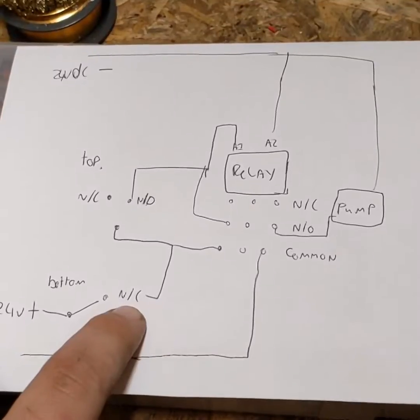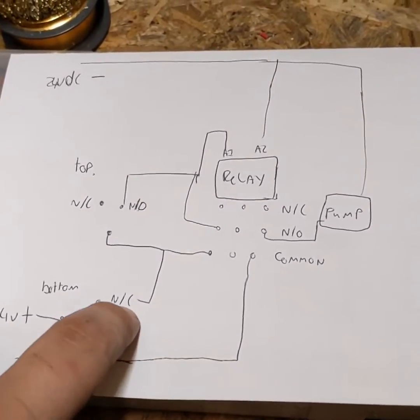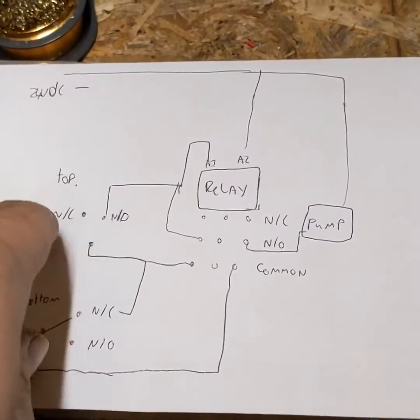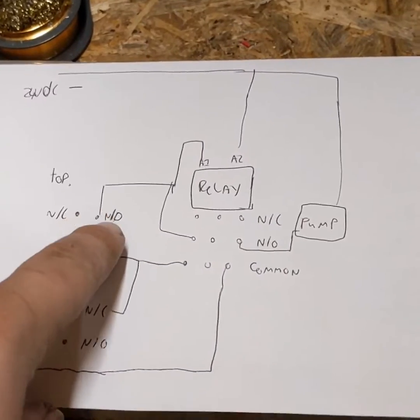So at the bottom, we use the normally closed contact of the switch, and at the top of the tank, we use the normally open contact of the switch.